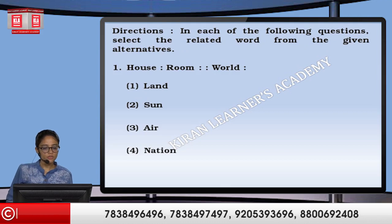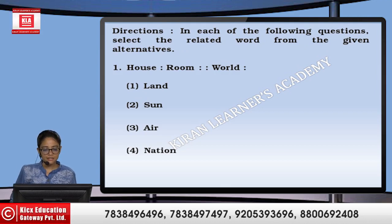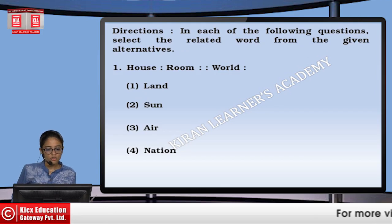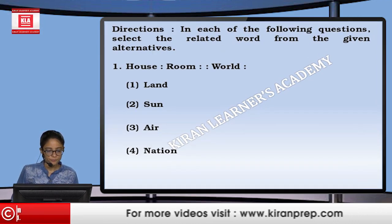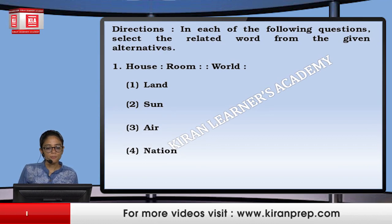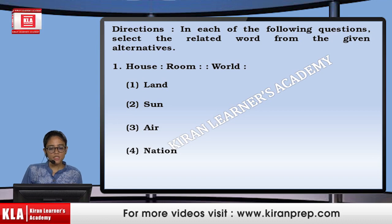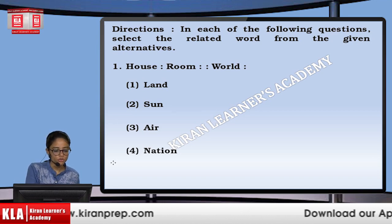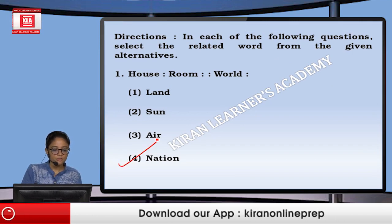First, in each of the following questions, select the related word from the given alternatives. If I talk about house is to room — a room is a place to stay in the house. Similarly, which is the place in the world to stay? That is nation. So, we are going to mark option number four.